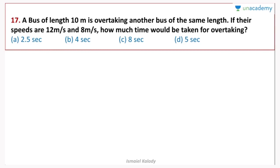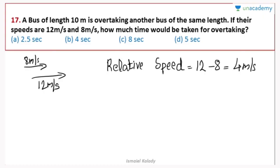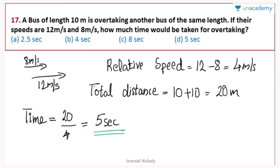A bus of length 10 meters is overtaking another bus of the same length. If their speeds are 12 meters per second and 8 meters per second, how much time would be taken for overtaking? Since they are going in the same direction, the relative speed is 12 minus 8 equals 4 meters per second. The total distance to cover is 10 plus 10 equals 20 meters. Time equals 20 divided by 4 equals 5 seconds. The answer is option D.